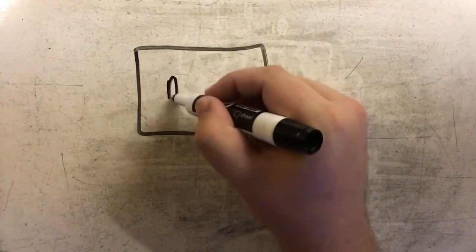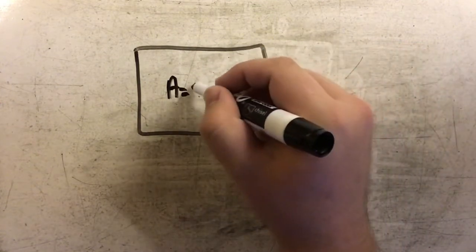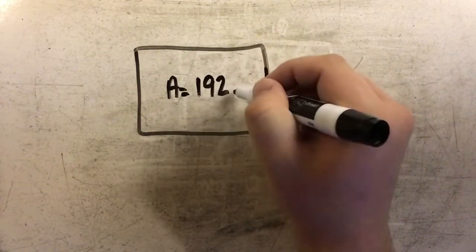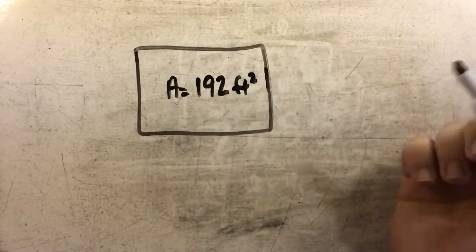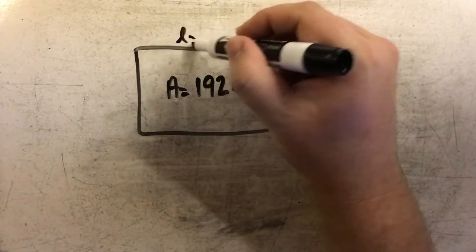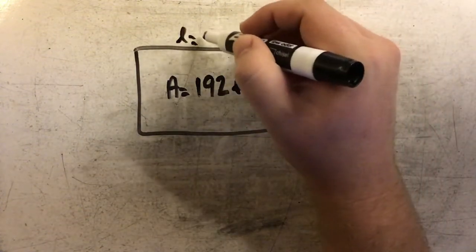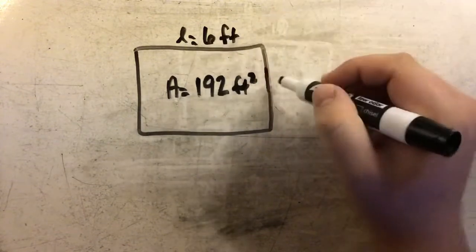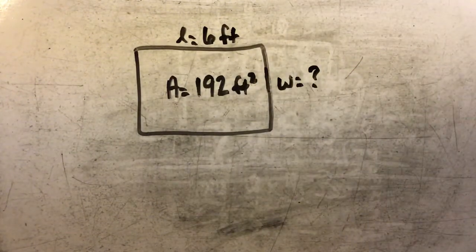In this example, the area is 192 square feet, and the length is 6 feet. We want to find the width.